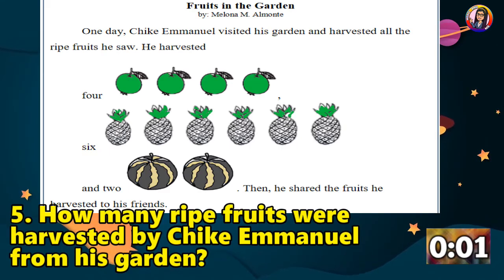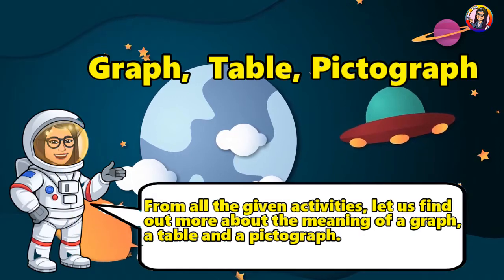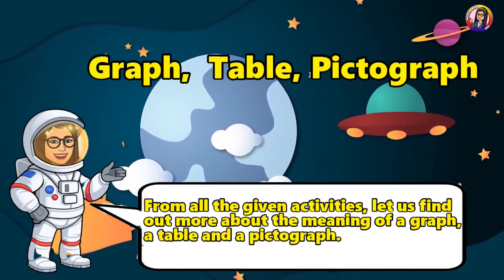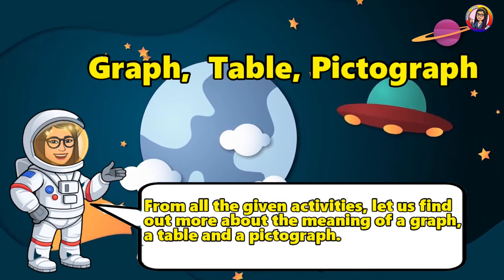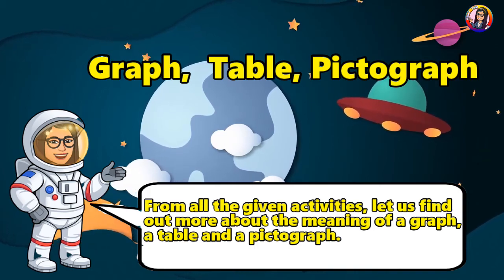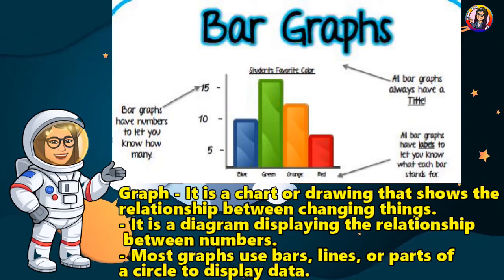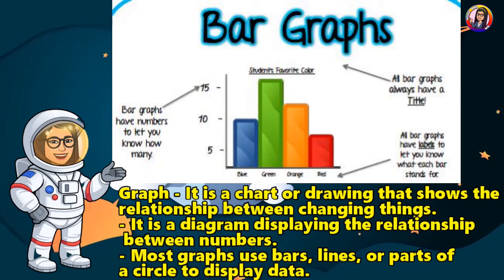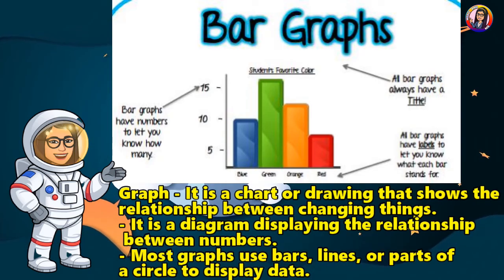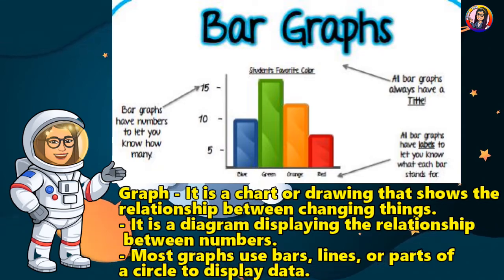Thank you for sharing your answers. From all the given activities, let us find out more about the meaning of a graph, a table, and a pictograph. A graph is a chart or diagram that shows the relationship between changing things. It displays the relationship between numbers. Most graphs use bars, lines, or parts of a circle to display data.